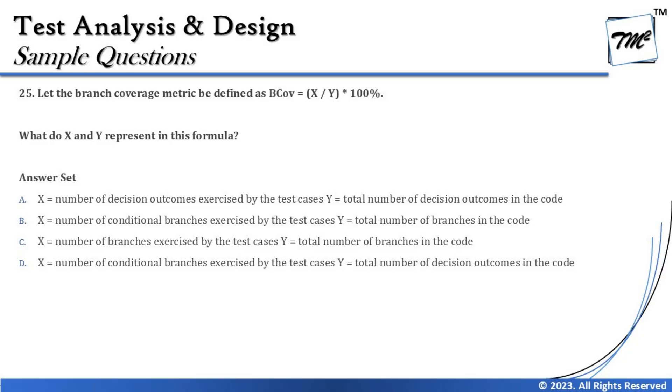Question number 25 is about branch coverage. It says let the branch coverage metric be defined as B_cov = x / y * 100, which returns a percentage measure. What do x and y represent? You should recall the formula from the slides: branch coverage equals number of branches executed by the test divided by total number of branches in the code, multiplied by 100. Do not expect this to be straightforward — there will be twists.